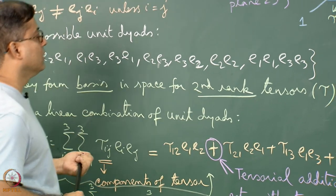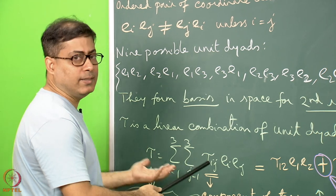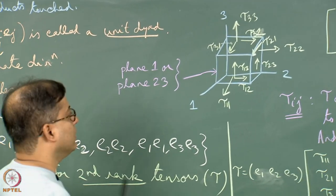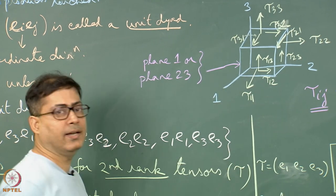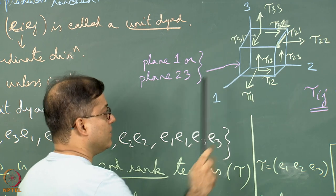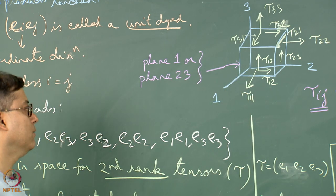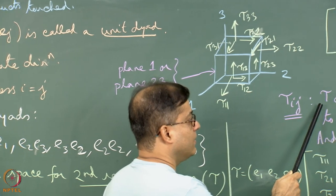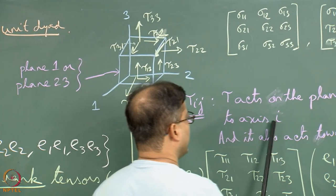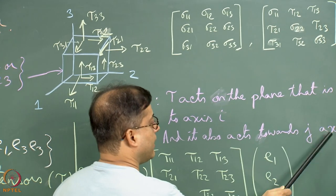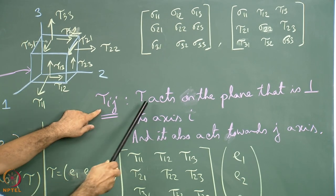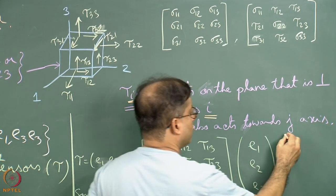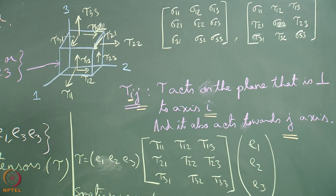Now it is a good time to explain what this means physically. Consider a cuboid with three perpendicular axes 1, 2 and 3 (also written as x1, x2, x3 or x, y, z in different books). We define tau_ij on the cube: tau acts on a plane perpendicular to axis i and acts in the direction of axis j. The first suffix indicates the plane, the second suffix indicates the direction.